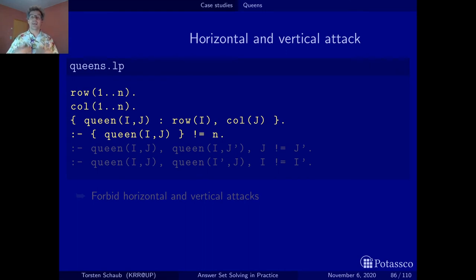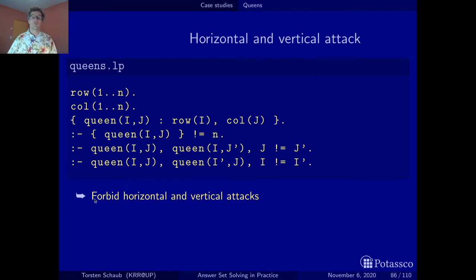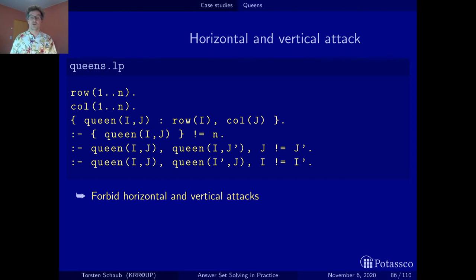We eliminate these invalid candidates by adding integrity constraints that rule out horizontal and vertical attacks. The first constraint says it must not be the case that we put two queens on the same line at different column positions. The second forbids two queens in the same row. These two constraints eliminate all solution candidates with horizontal and vertical attacks.